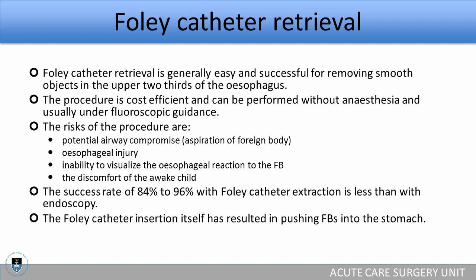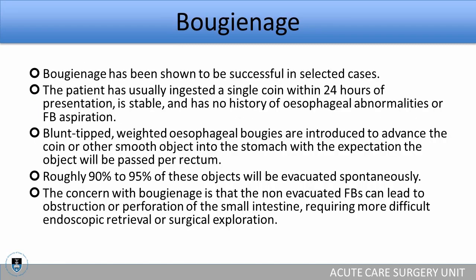Bougienage has been shown to be successful only in selected cases — typically a patient who ingested a single coin within 24 hours of presentation, is very stable, and has no history of esophageal abnormalities. A blunt-tipped weighted esophageal bougie is introduced and advanced to the foreign body, literally pushing the coin or smooth object into the stomach, with the expectation it will be passed spontaneously per rectum. Roughly 90% to 95% of objects will be evacuated spontaneously, but non-evacuated foreign bodies can lead to obstruction or perforation of the small intestine.